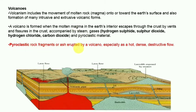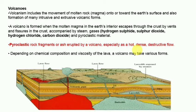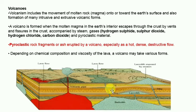Many pyroclastic materials are also present in volcanoes. Pyroclastic rocks are fragments or ash erupted by a volcano, especially as a hot dense destructive flow. Depending on chemical composition and viscosity of lava, a volcano may take various forms. A sill is a horizontal intrusion of molten magma, a dike is a vertical intrusion, and a batholith is a large body of magmatic material that cools at deeper depths of the crust, developing in the form of large domes.